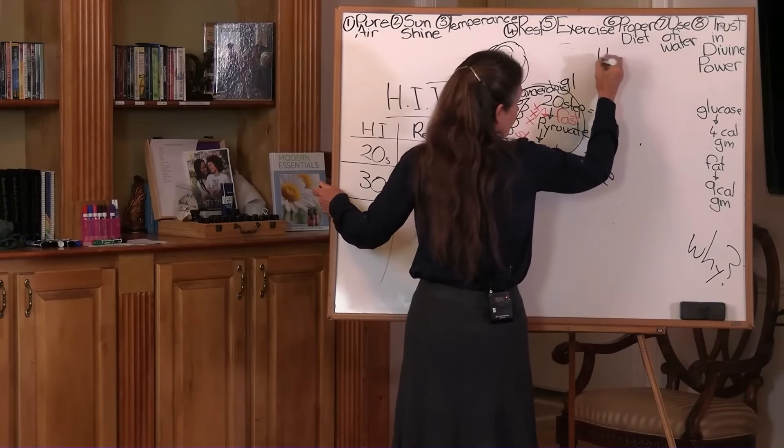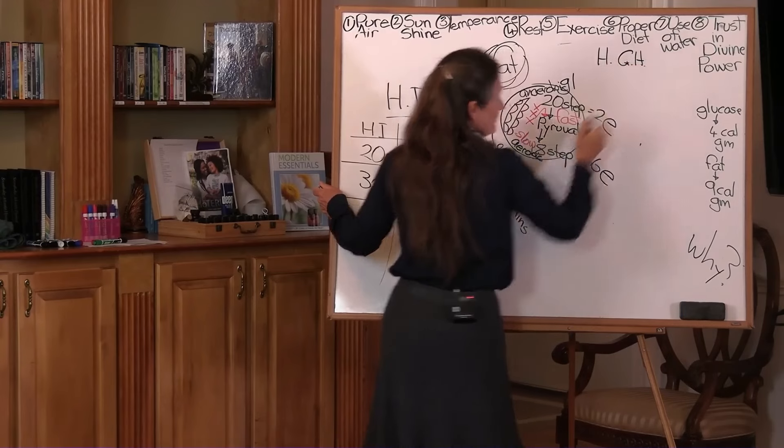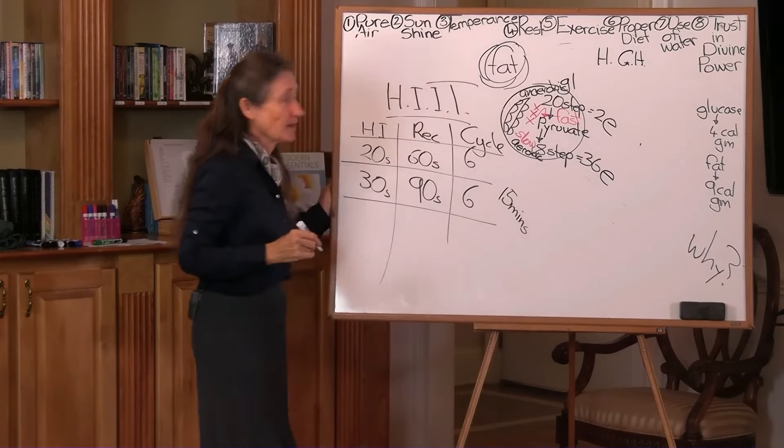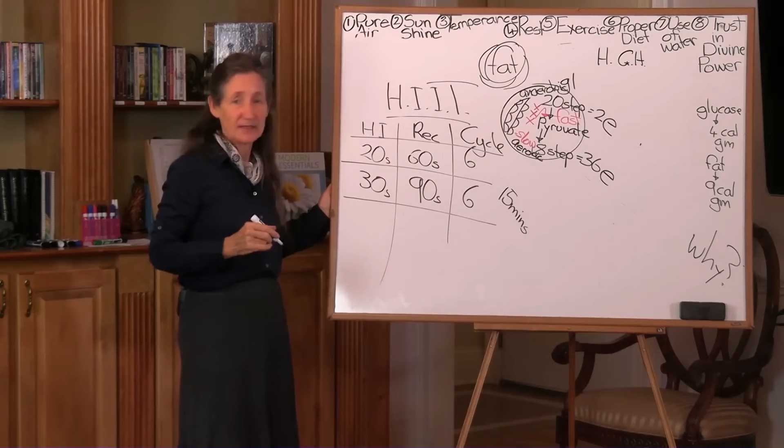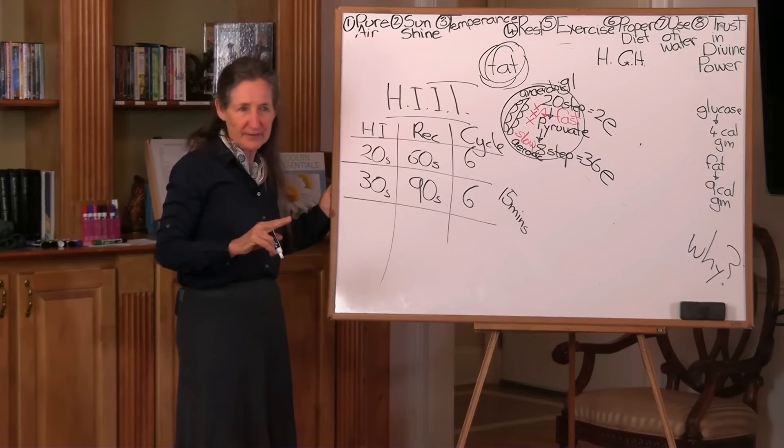The human growth hormone is very active when we're growing. But when we stop growing—I stopped growing at 16, that probably doesn't surprise you. My son William grew 2 inches from 19 to 22; boys usually grow a bit longer—it goes into retirement.